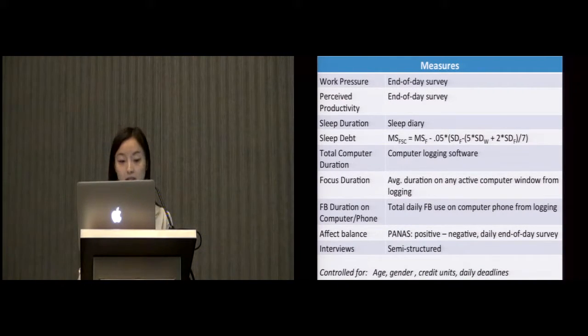From the computer logging software, we computed a focus duration. And by focus duration, I mean the average duration of time on any active computer window before they switch to the next window as a proxy for multitasking. For Facebook use, we combined the time spent on Facebook from computer and phone. Mood was measured using the PANAS scale at the end of the day. PANAS measures two dimensions of mood, positive and negative affect. And we created a measure of affect balance, which refers to the balance between positive and negative affect.